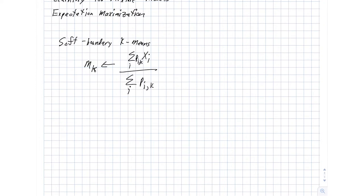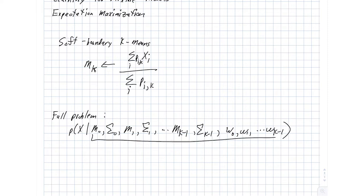So our full problem then, we have this likelihood function that looks like this. We have our m_0, sigma_0, m_1, sigma_1, out to m_{K-1} and sigma_{K-1}. And then we have our weights, w_0, w_1, out to w_{K-1}. So there's a lot there. Our goal is to estimate all of these things here.